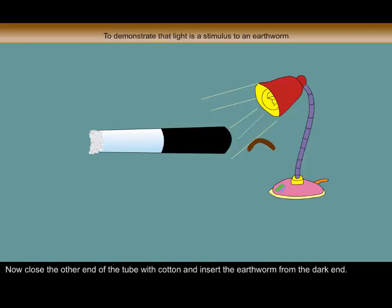Now close the other end of the tube with cotton and insert the earthworm from the dark end. You will observe that the earthworm remains in the dark portion of the glass tube.